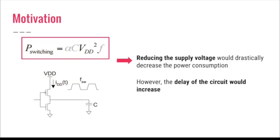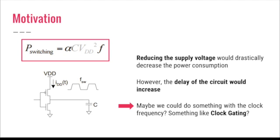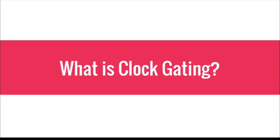To reduce the power consumption, we could reduce the supply voltage. But as we know, the delay of the circuit would increase and this means that the circuit would be slower. Instead, another solution would be to decrease the switching frequency by periodically disabling the clock. This is equivalent to introduce an activity factor to the switching power equation.